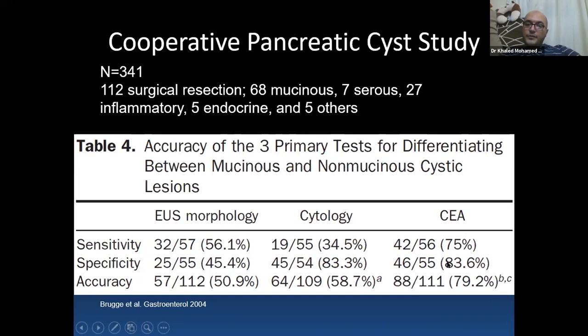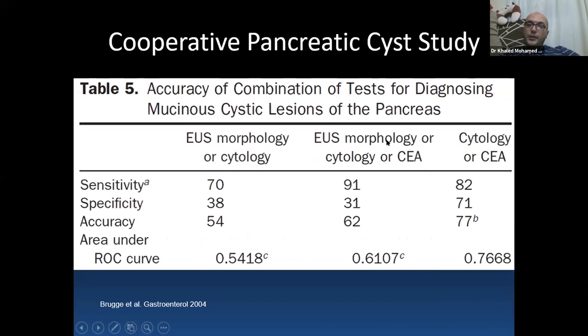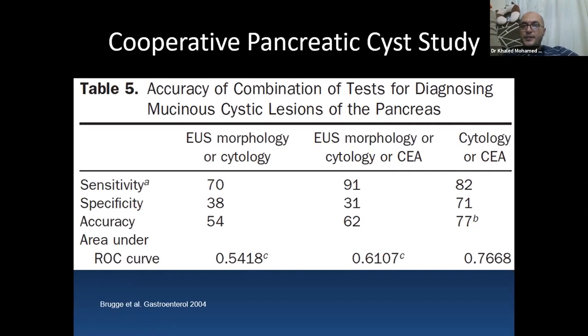According to three primary tests for differentiating mucinous from non-mucinous cystic lesion: EOS morphology alone has low sensitivity of 50-65%, cytology alone 30%, and CEA is highest at 75-83%. Combining EOS morphology with cytology and CEA raises sensitivity significantly. It is recommended not to rely only on EOS morphology but to combine it with cytology and tumor markers, especially carcinoembryonic antigen.